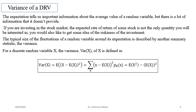Variance is defined as the expectation of the square of the mean-deviated random variable. You observe random variable X, subtract the mean to get the deviation, then take the square so that deviations on both sides are treated equally, and then take the expectation. So variance = E[(X − E[X])²]. This is the definition of variance.